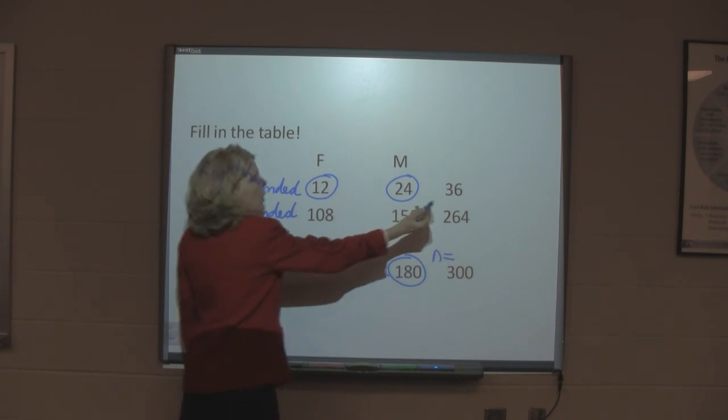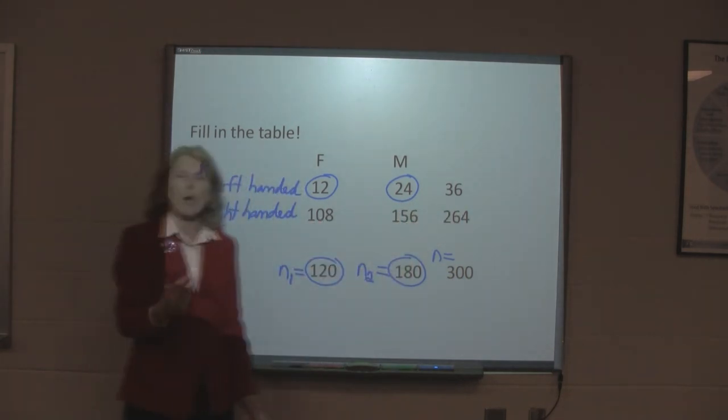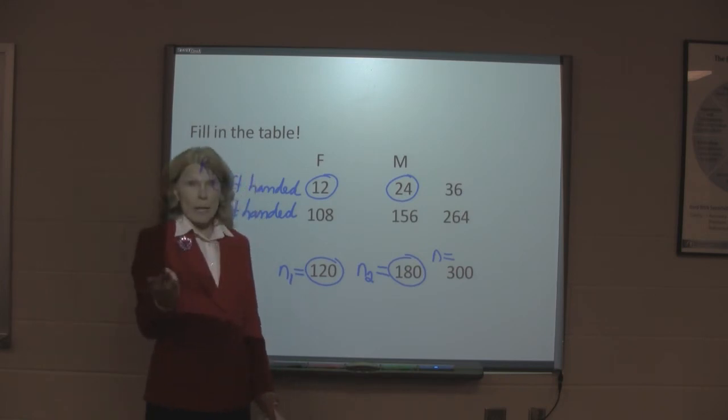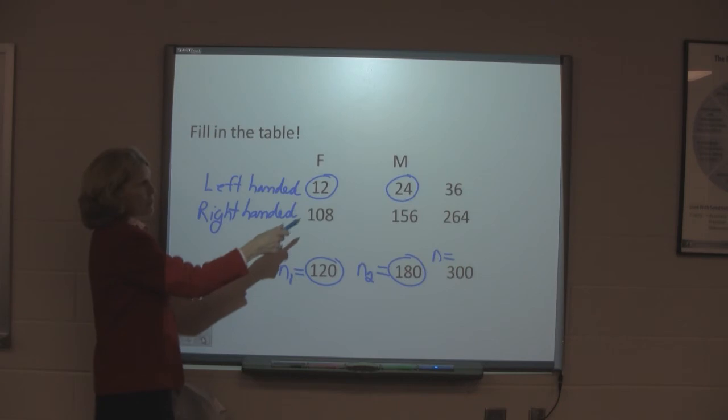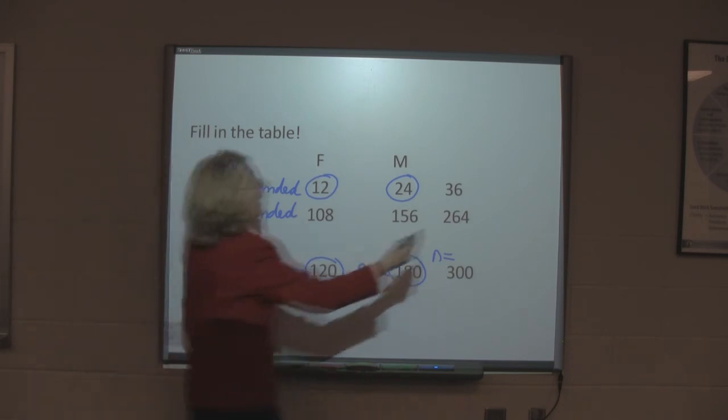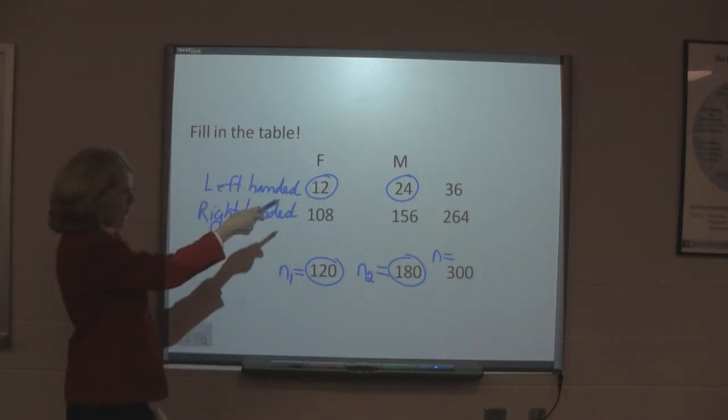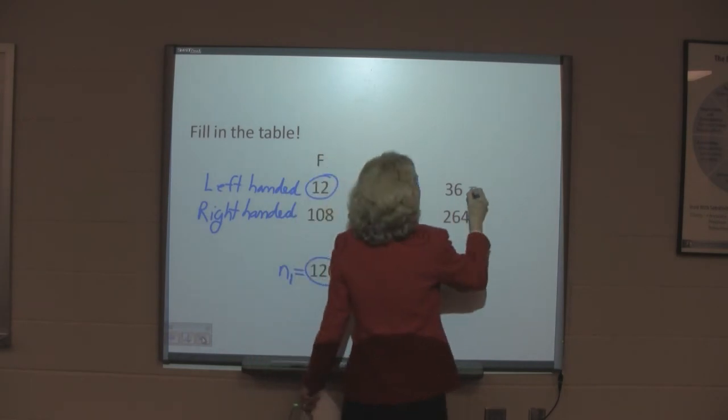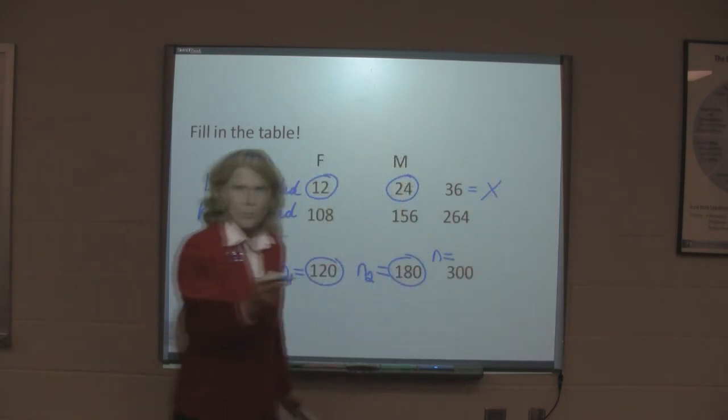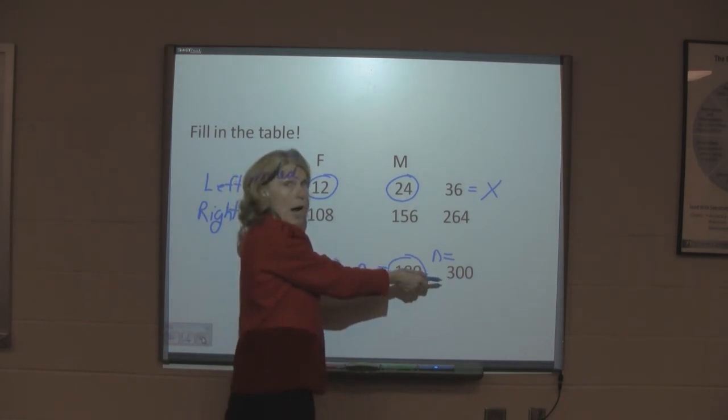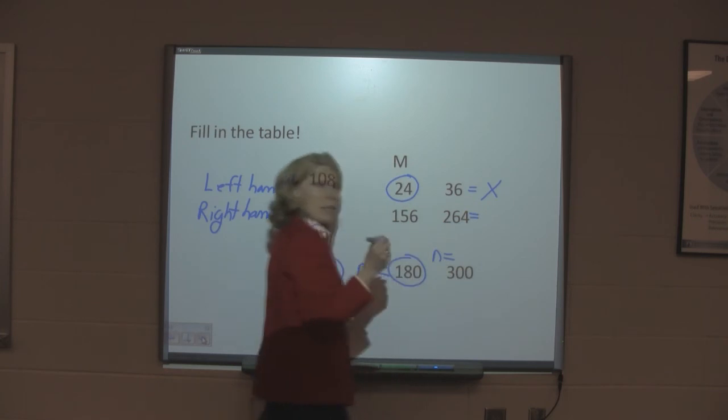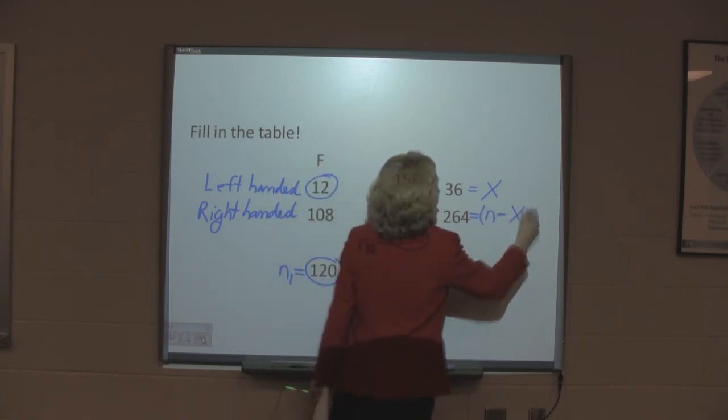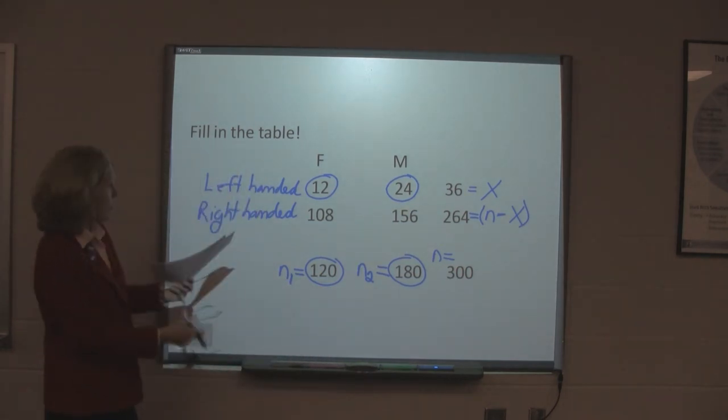Then, we can add across the total number of left handed people out of 300 in the sample, 36. And then, the right handed people, 108 plus 156 is 264. Now, the 36, we're interested in the left handed people. 36 is going to be denoted as x. Then, as we said, 300 is n. So, 264 is n minus x. That's how you fill in this table.